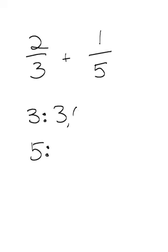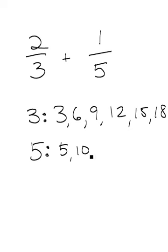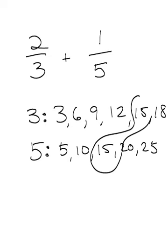As I skip count by 3's and I skip count by 5's, I'm going to look for a multiple that they have in common. I notice that the first multiple they have in common is 15.